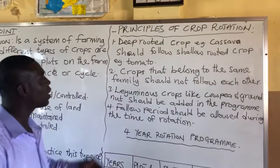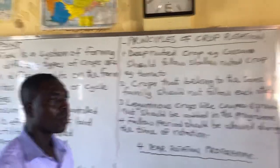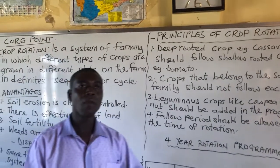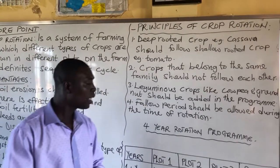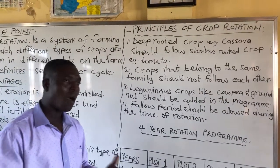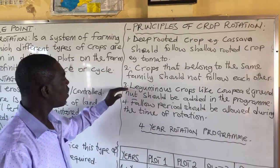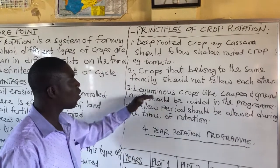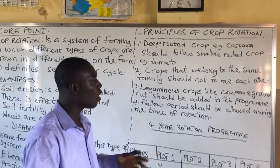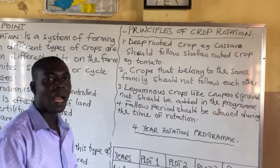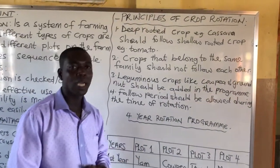The second principle is that crops that belong to the same family should not follow each other. For example, with cereals we have maize, rice, and wheat — they belong to the same family and therefore they shouldn't follow each other on the farm season after season. The third principle is that leguminous crops like cowpea should be added in the program so that they can add nitrogen into the soil, making sure that soil nutrients are maintained.